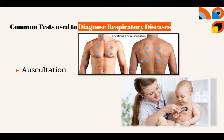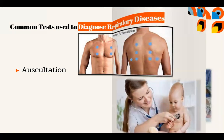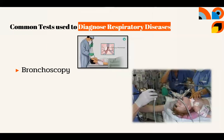Auscultation. This is what doctors do when they use a stethoscope to listen to your breathing. Bronchoscopy. This is a procedure that uses a bronchoscope, a thin tube with a light at the end. It is inserted into the airways leading to the lungs to check for inflammation, infection, and other symptoms.